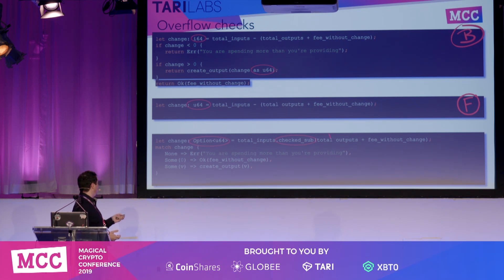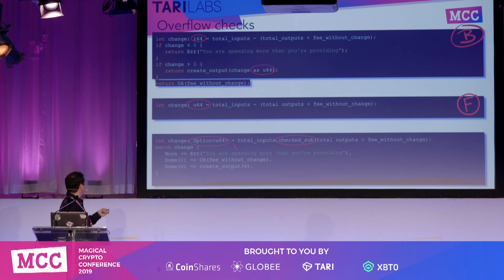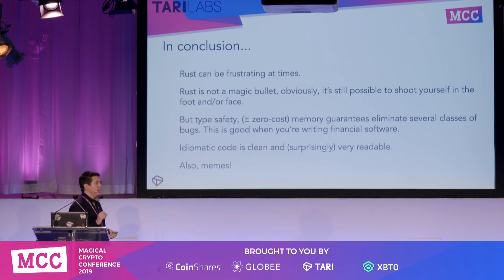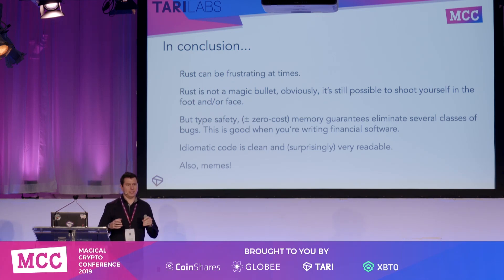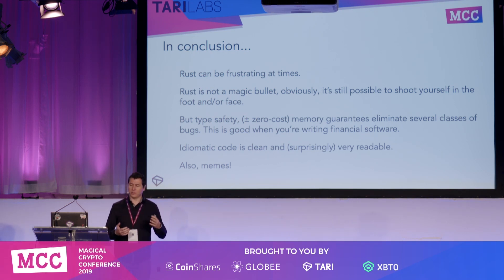What idiomatic Rust wants you to do is a checked subtraction. You use it with an unsigned integer, but if it tries to go negative, it returns a concept of 'None' and you can check for the exact cases you're interested in. This code does exactly the same as the verbose version, but looks a lot cleaner and more readable. That's one thing I've found in Rust — even though it's a fairly low-level language, it really can make for beautiful, elegant, readable code, which is super helpful when reading other people's code and doing code reviews.